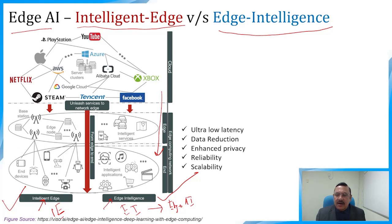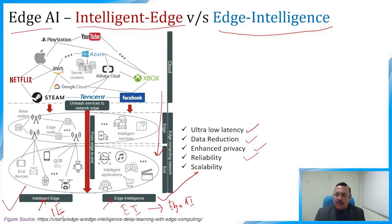Notable benefits of edge computing include: ultra-low latency and response times significantly lower compared to the cloud, enabling real-time data analysis and decision-making; data reduction — reducing the volume of data transferred, optimizing bandwidth and cost; enhanced privacy and security — data processed locally reduces security threats; reliability — devices can function even without cloud connectivity; and scalability — edge scales well with the amount of data to be processed.